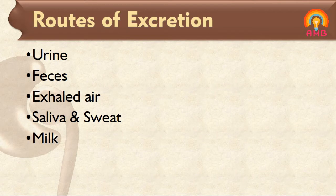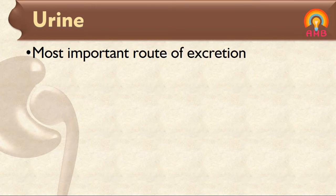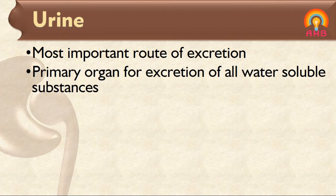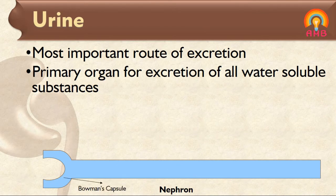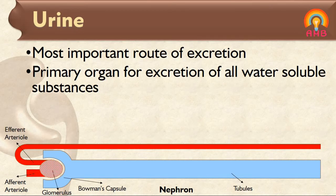First we are going to discuss about urine. It is the most important channel of excretion of many drugs. Kidney is the primary organ for excretion of all water-soluble substances. Here you can see the nephron — this is Bowman's capsule and this is the tubular portion. The afferent arteriole divides to form the glomerulus and reunites to form the efferent arteriole, which then divides to form the peritubular capillary network.